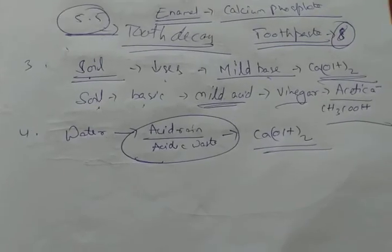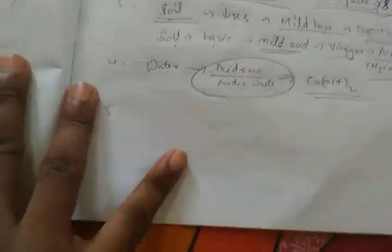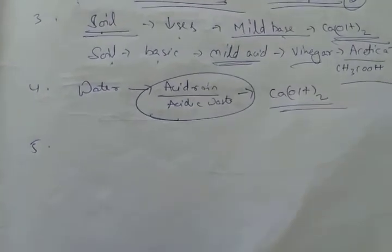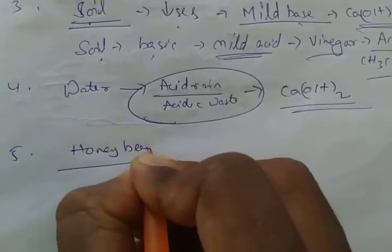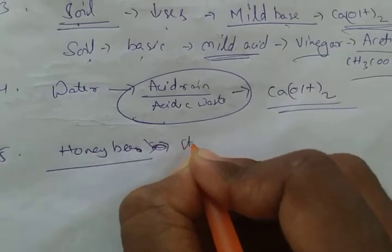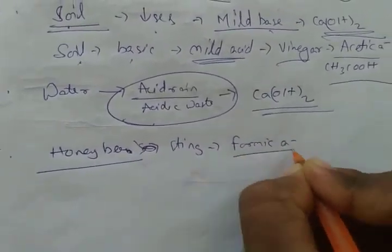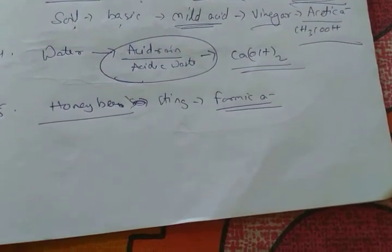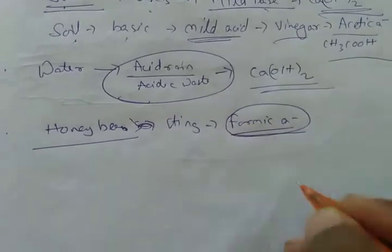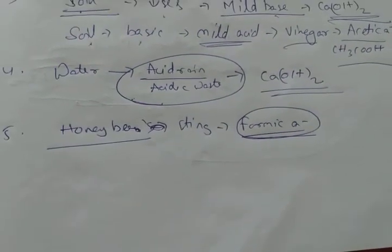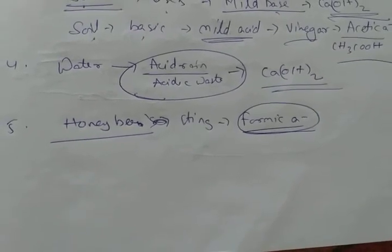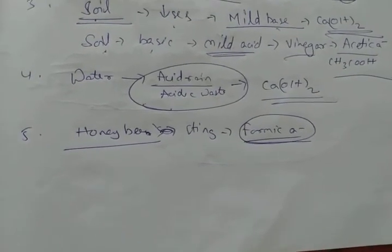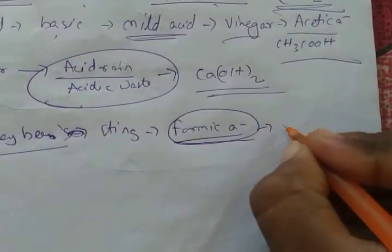pH helps in self-defense also. Many animals such as honeybee use acids for defense. Honeybee sting has formic acid. If this insect is disturbed by any person, it stings and injects formic acid into the body, which causes moderate to severe pain. The animals are using acids or bases for their self-defense.